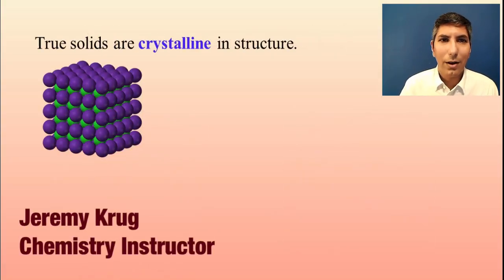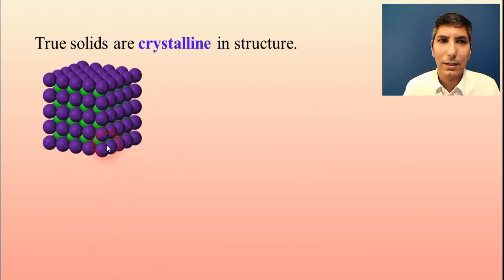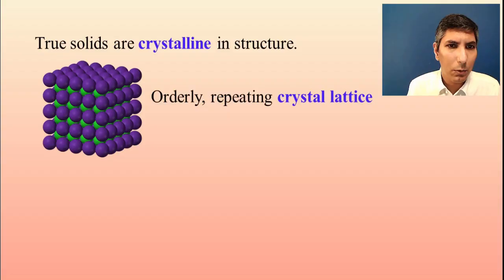True solids are crystalline in structure. We've talked about ionic solids, covalent network solids, how they have this nice crystalline structure. Even most molecular solids have that crystal structure. Think of ice, think of snowflakes. Beautiful crystals. We call this a crystal lattice, a very orderly structure where it repeats itself.